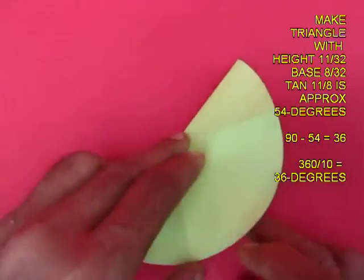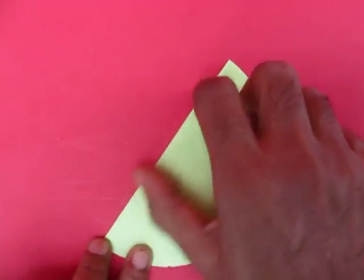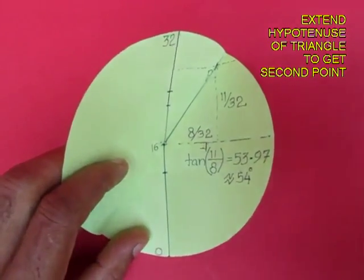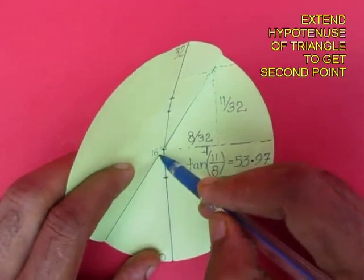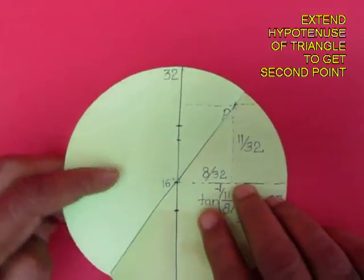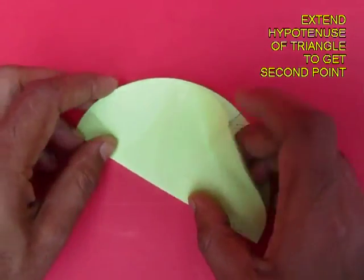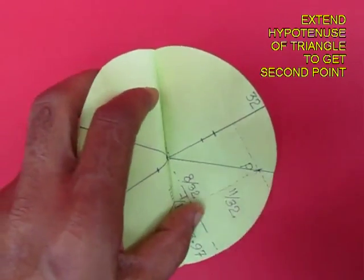So angle P to the right would be 54 degrees. Now mark this diameter. Once again extend the hypotenuse of the triangle to get the second point.